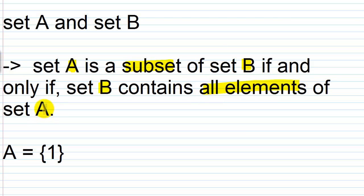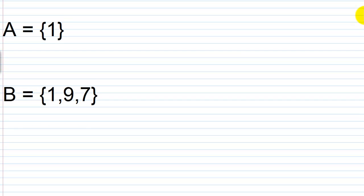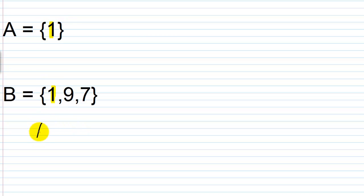Let's look at an example where that's the case. We have set A, which contains one element — the number one. We have set B, which contains three elements: the numbers one, nine, and seven. All the elements of set A are contained in set B, so by definition, we can say that A is a subset of B.